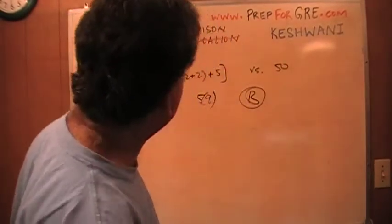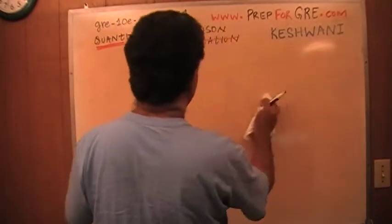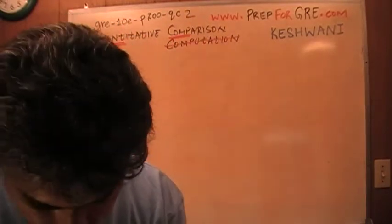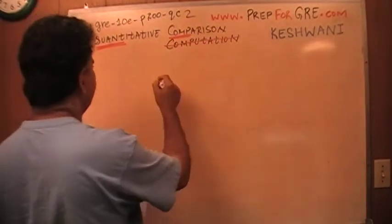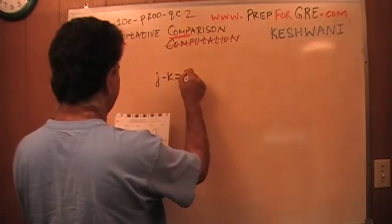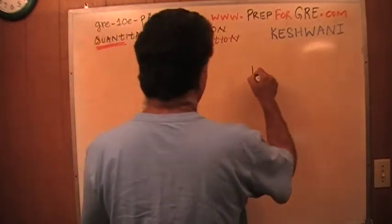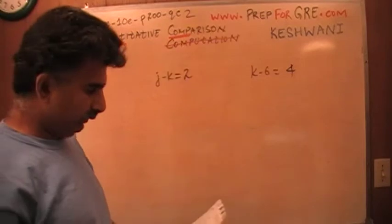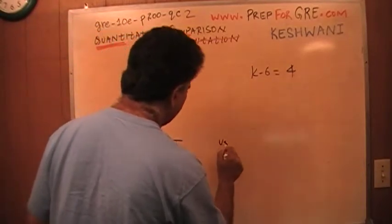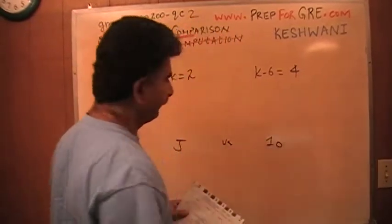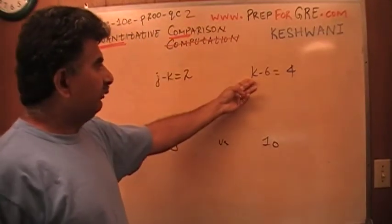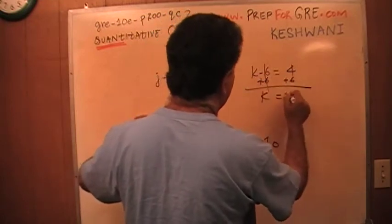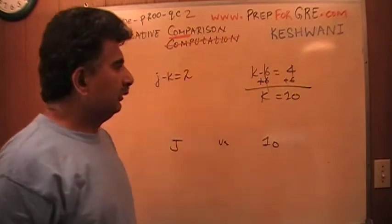That's all. Let's look at number 2. Number 2 says J minus K equals 2, and we are told that K minus 6 is 4. And we are asked to compare J versus 10. Well, from this equation, we can figure out what K is. K equals 10 obviously.